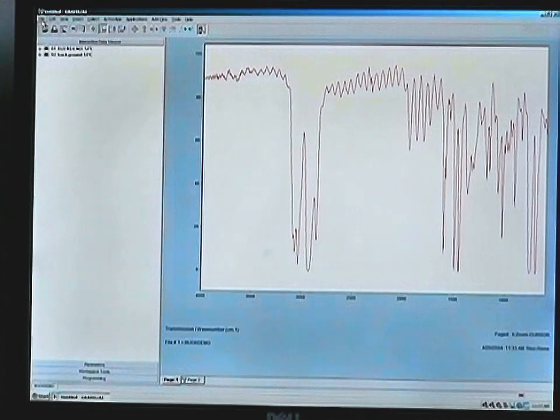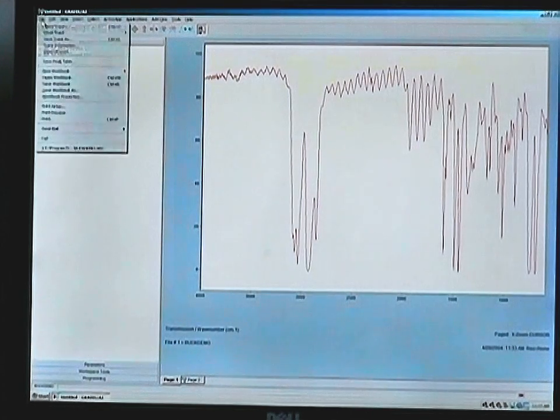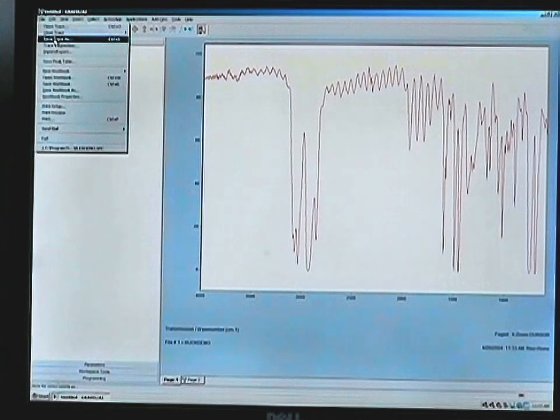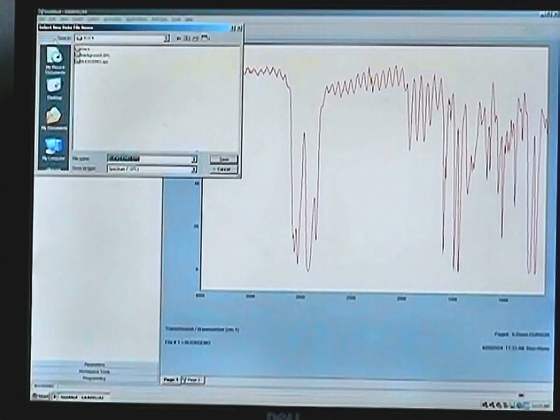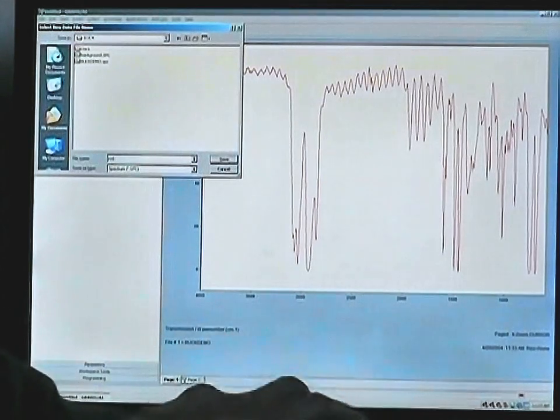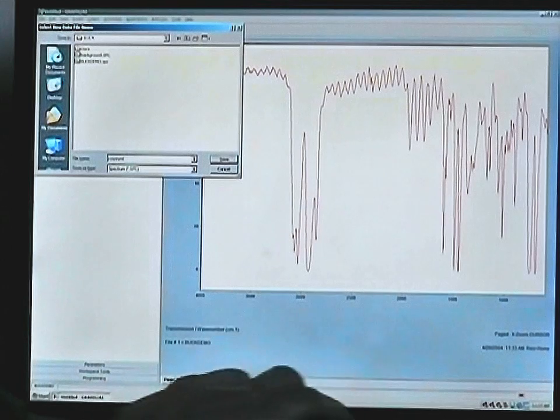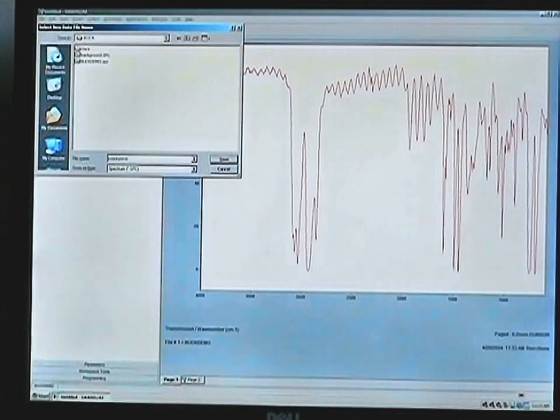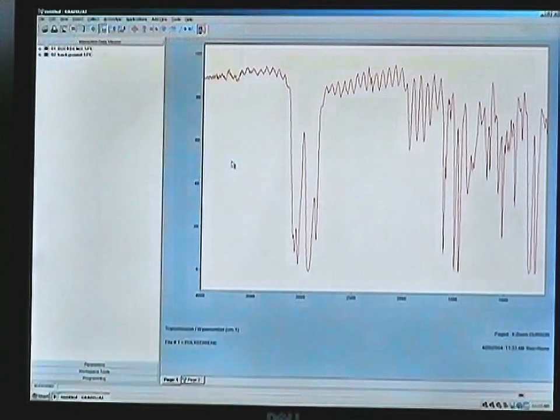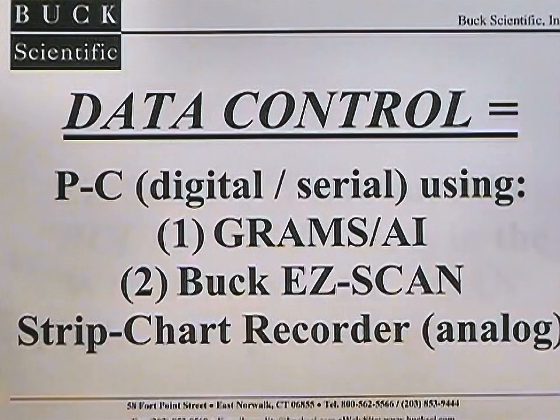As the process is completed, it will return you to the GRAMS AI screen and you could do whatever manipulations you want. After the process scan is completed, save the trace under a specific name, and this way you can retrieve it for future analytical work, library searches, or quantitative analyses. This concludes the basic operator training video.